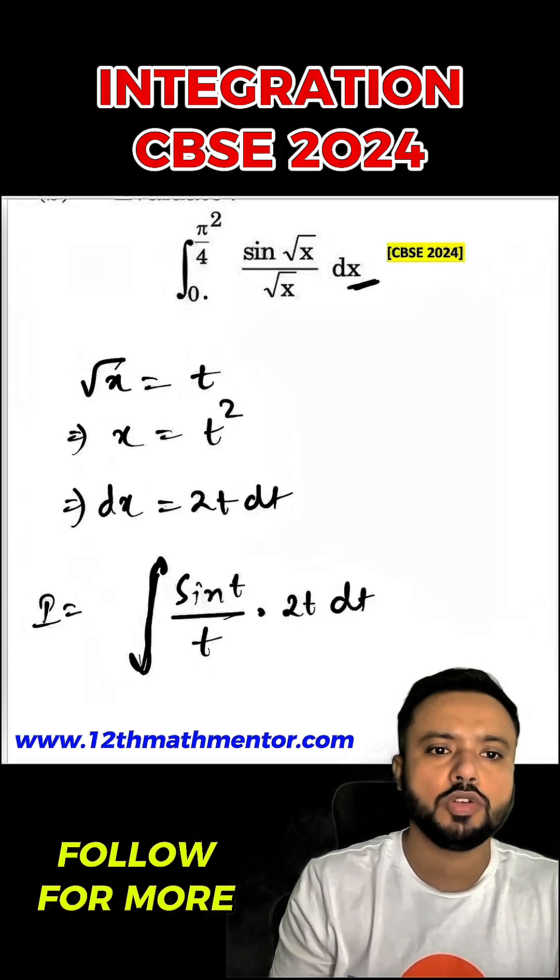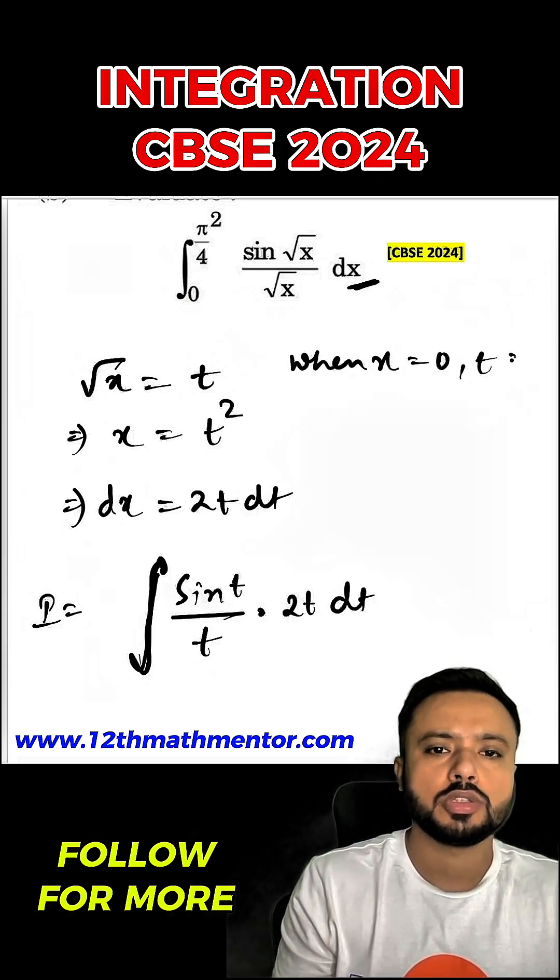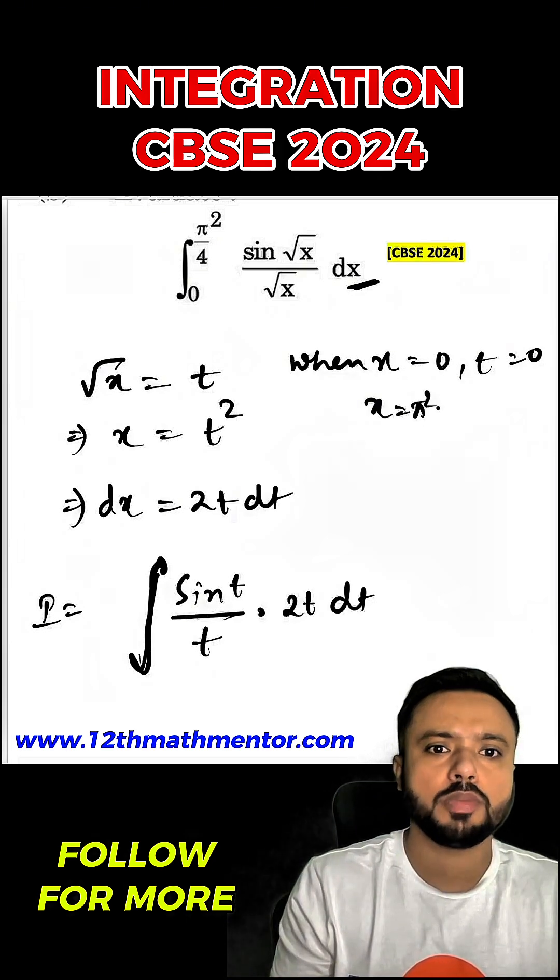Now we'll have to figure out the new limits as per t. So since root x equals to t, when x equal to 0, t is also 0. And when x equals to pi square upon 4, t is root of pi square upon 4, which is pi upon 2.